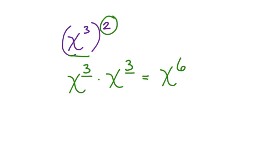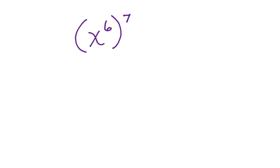But sometimes you're going to need a shortcut. Take a look at this next one. We have x to the sixth to the 7. We could write out x to the sixth seven times. But when you are multiplying the whole quantity by a value outside the parentheses, you can multiply the exponents. 6 times 7 is 42. This is equal to x to the 42nd power.